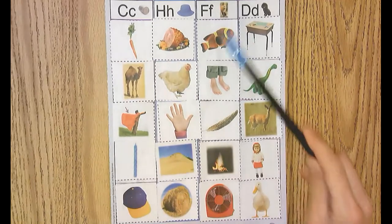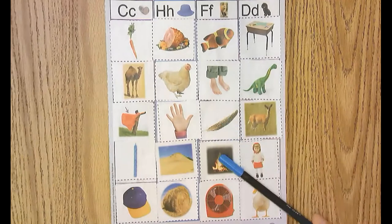In the column f, we have fish, feet, feather, fire, and fan.